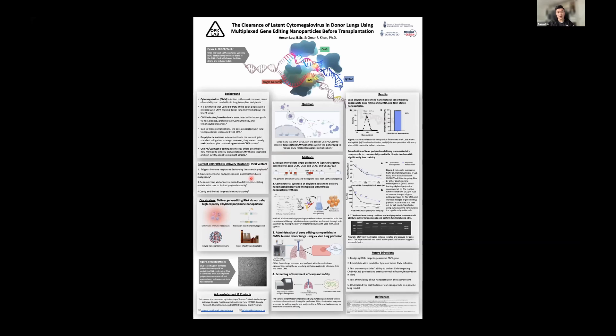So the current strategy of delivering CRISPR-Cas9 payloads utilizes viral vectors, however, viral vectors can trigger immune responses, which can then destroy the therapeutic payload, has the risk of insertional mutagenesis, which can potentially cause cancer. It also has a limited payload capacity, which means multiple separate viral vectors are required, and it is very costly and limited in large-scale manufacturing.